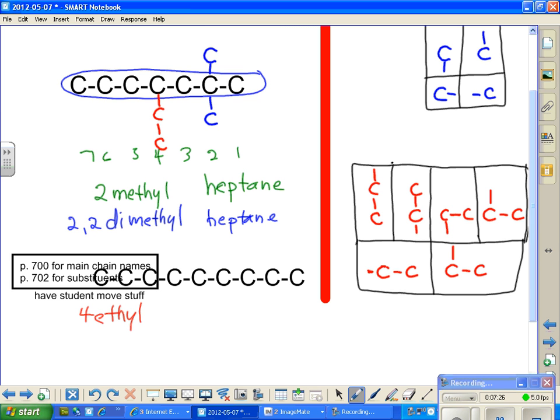And then, 2,2-dimethyl-heptane. Why do you put a comma? Just to separate it so it doesn't look like 22. That's the only reason. Why do you write 4-ethyl first? Because it's in alphabetical order.